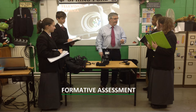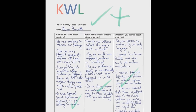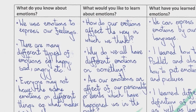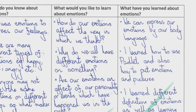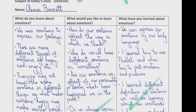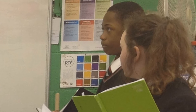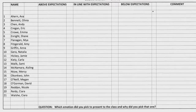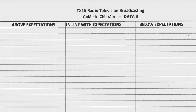Formative assessments would include the following. KWL: the students would identify what they already know about emotions, what they would like to know about emotions, and also what they have learned in class about emotions. Prior to the presentation to the class, the student would discuss the choice of emotion to be presented and also why they chose that particular emotion. This would allow the teacher and the student to assess at what stage of understanding the student is.